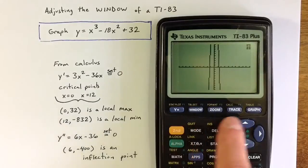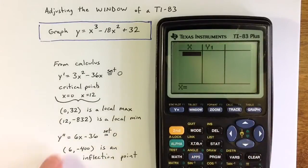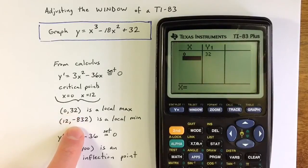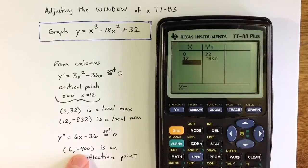So I can go to the table and confirm that at 0, the y value is 32. At 12, the y value is negative 832, and at 6, the y value is negative 400.